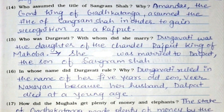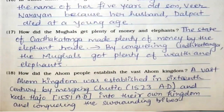Fifteenth: Who was Durgavati and whom did she marry? Durgavati was the daughter of the Chandel Rajput king of Mahoba; she was married to Dalpat, the son of Sangram Shah. Sixteenth: In whose name did Durgavati rule and why? Durgavati ruled in the name of her five-year-old son Veer Narayan, because her husband Dalpat died at a young age. Seventeenth: How did the Mughals get plenty of money and elephants? The state of Gadkataanga made plenty of money by the elephant trade; by conquering Gadkataanga, the Mughals got plenty of wealth and elephants.